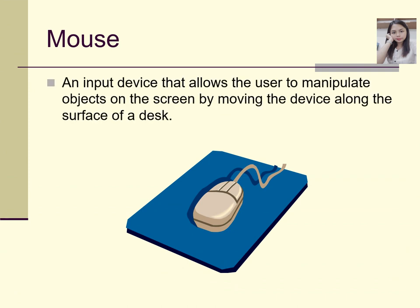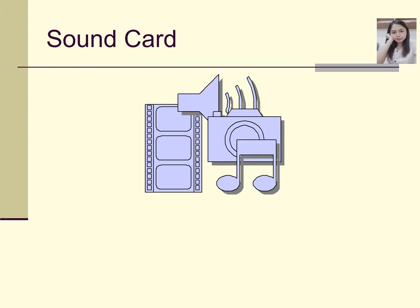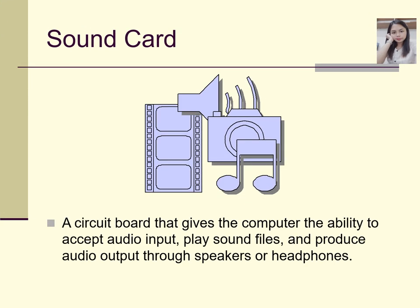A mouse is an input device that allows the user to manipulate objects on the screen by moving the device along a surface or desk. A sound card is a circuit board that gives the computer the ability to accept audio input, play sound files, and produce audio output through speakers or headphones.